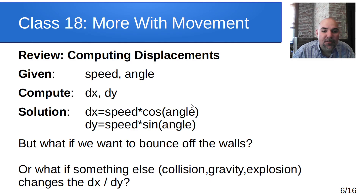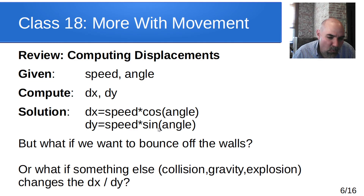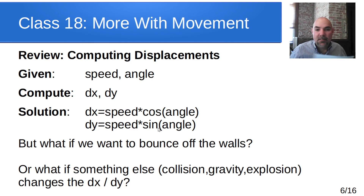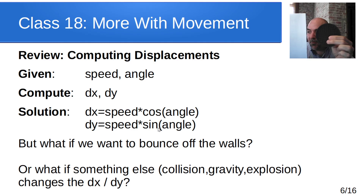So we have a way: given the speed and the angle, we can compute the displacements. But now we're up to what we want to cover today, which is something new — what if we want to bounce off the walls? If we have something that bounces, it's going to need to change the dx and dy. Let me switch over to the document camera and draw a picture of this so you can get a sense of what I'm talking about.